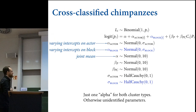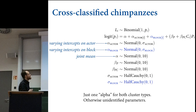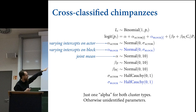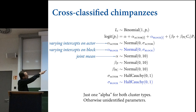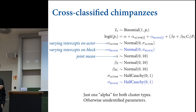Now let's add another cluster: block. The strategy works exactly the same—you just duplicate some structure but put the word block in there. We have varying intercepts on actor—alpha sub-actor is normally distributed with mean zero and sigma sub-actor—and now we also have varying intercepts on block: alpha sub-block with its own standard deviation, which may differ from the standard deviation among actors. Both go into the linear model as offsets from one shared alpha.